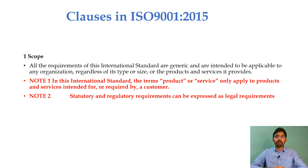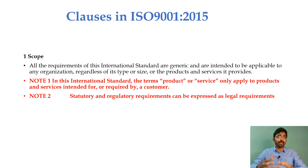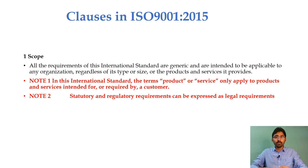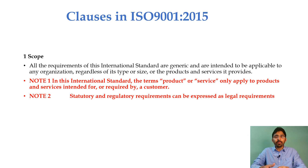Clause number 1 is scope. All the requirements of this international standard are generic and are intended to be applicable to any organization regardless of its type or size or the products and services it provides. The term product or service only applies to products and services intended for or required by a customer. Statutory and regulatory requirements can be expressed as a legal requirement. This standard, ISO 9001-2015, can be applicable to any organization whether it is automobile, medical device, or pharma, irrespective of type or size.